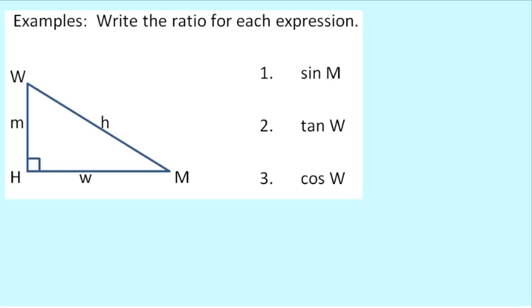Alright, so some examples using these vocab terms. We want to figure out what the sine of m is. Notice they don't just say, what's the sine? They say, what's the sine of an angle? I can't emphasize enough how important that is and how frequently it's overlooked. You can't just have sine. It's got to be sine of something.